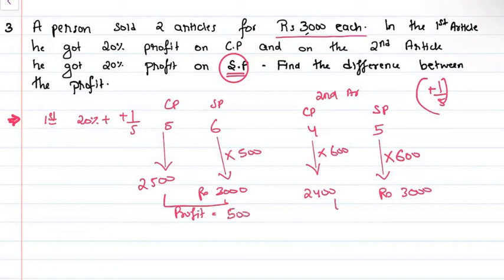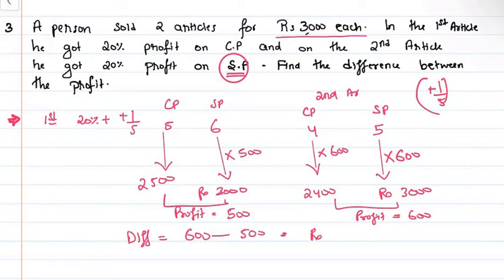On the second article, profit is Rs.600. On the first article, profit is Rs.500. So the difference between the profit is Rs.100.